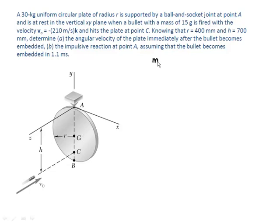The mass of the plate is 30 kilograms. That's a given value. The radius of the plate then is 400 millimeters. However, the impact takes place a distance h below the pivot here at the top. So h is equal to 700 millimeters.